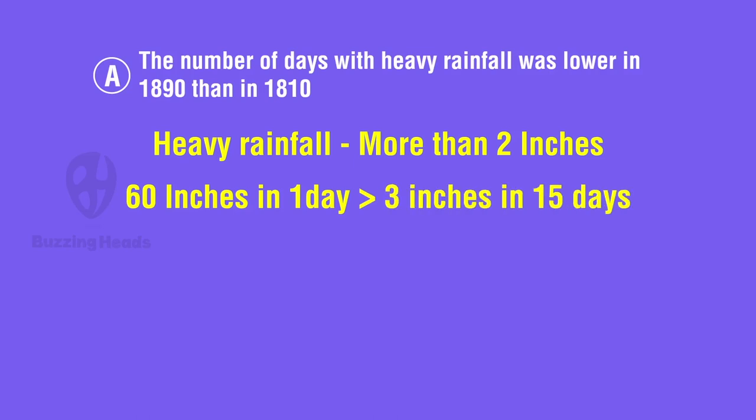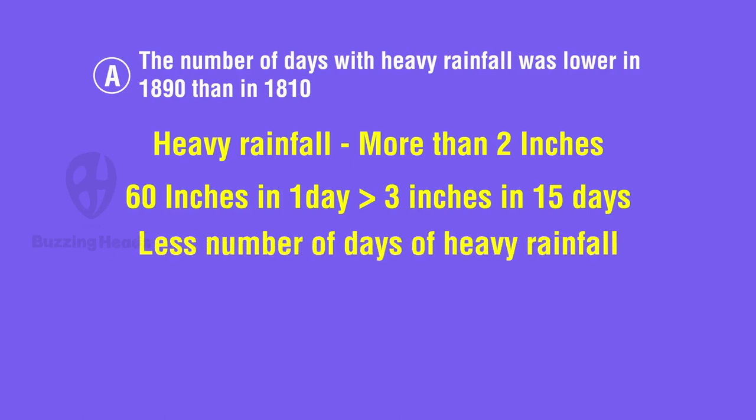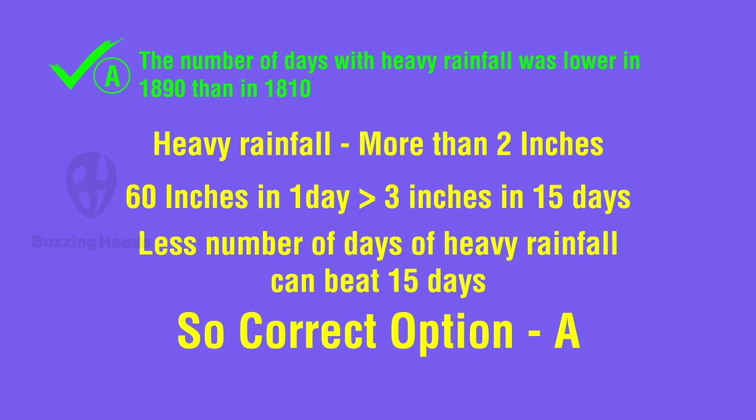The heavy rainfall inches are anything more than 2. So, if it is 60 inches of rainfall, that is also heavy rainfall. If it is 3 inches of rain, that is also heavy rainfall. So, 60 inches of rainfall in one day is still more than 3 inches of rainfall for 15 days. In this case, we have less number of days of heavy rainfall, but still that one day might beat those 15 days. Thus, the answer option A can be true in some cases and hence the correct answer option.